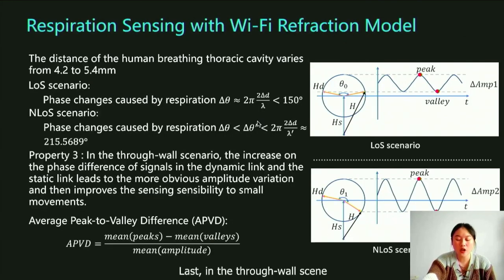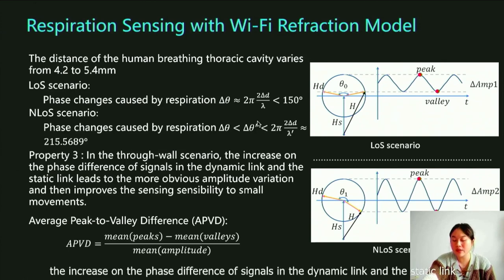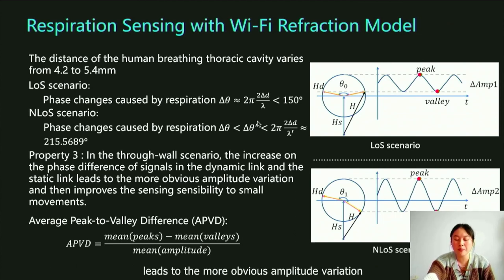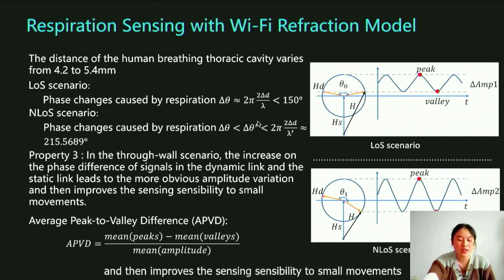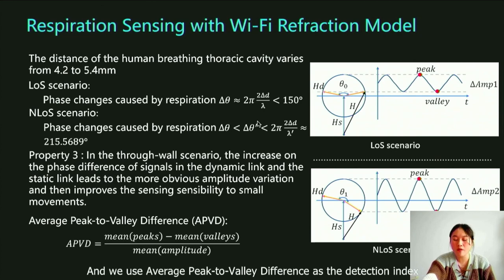Last, in through-wall scenes, the increase in the phase difference of signals in the dynamic link and static link leads to more obvious amplitude variation and then improves the sensing sensitivity to small movements. We use average peak-to-value difference as the detection index.